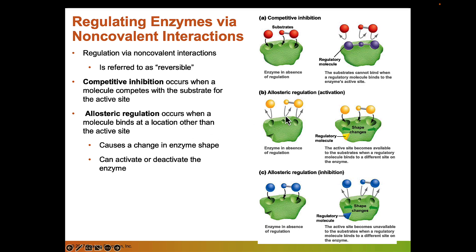Another type of regulatory molecule is an allosteric regulator, which binds somewhere other than the active site and changes the shape of the enzyme. An allosteric activator binds elsewhere and changes the enzyme shape to open up the active site to bind substrates. An allosteric inhibitor also binds away from the active site but changes the shape to close the active site to substrates. This is one way cells can regulate when they want an enzyme turned on or turned off.